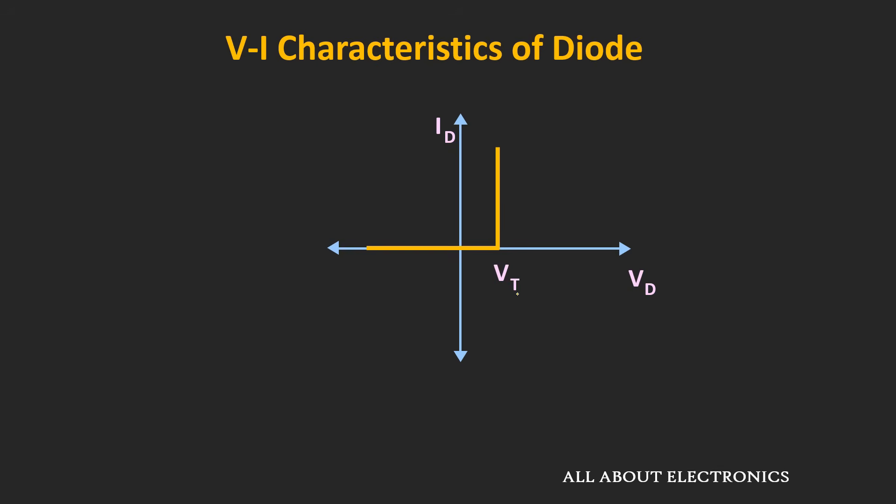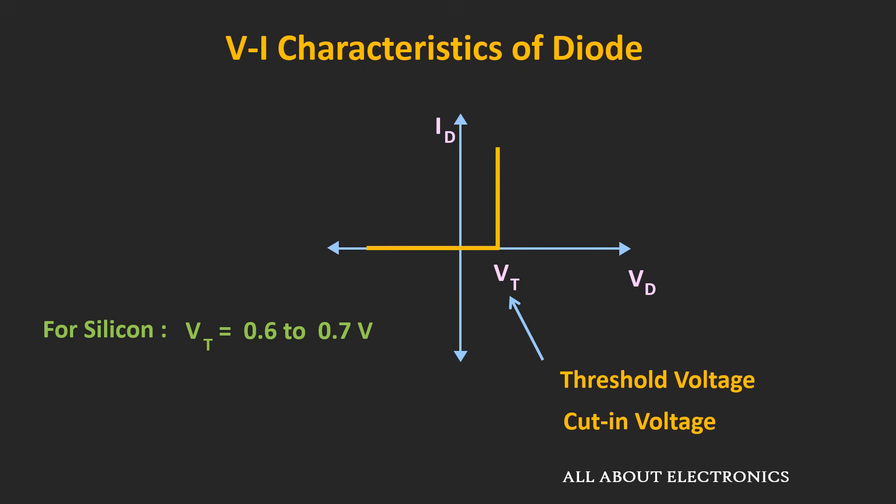This voltage is known as the threshold voltage or the cut-in voltage of the diode. Since the diode is a semiconductor device, it is usually made of either silicon or germanium. For silicon, the threshold voltage is in the range of 0.6 to 0.7V, while for germanium it is usually around 0.3V. So the diode will start conducting only once the applied voltage crosses this threshold voltage; before that it will not allow any flow of current.